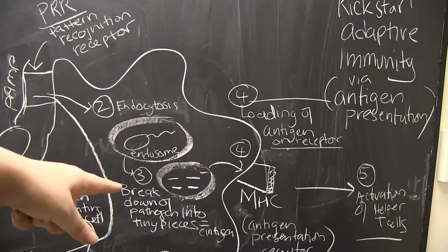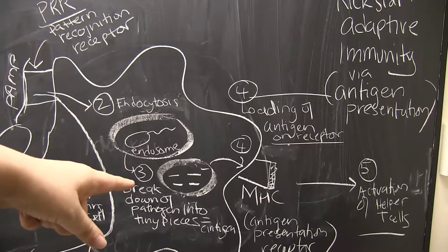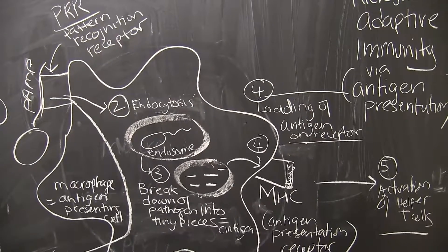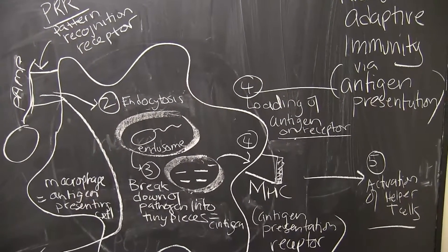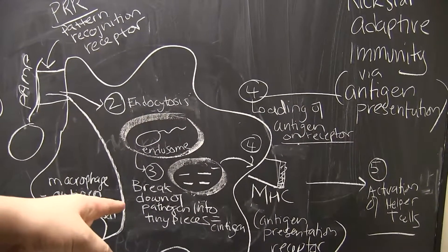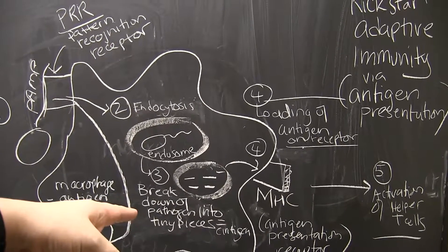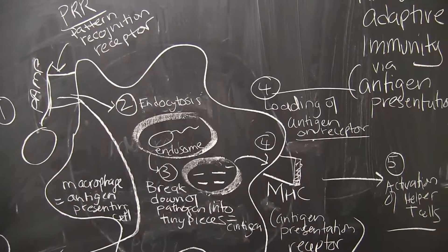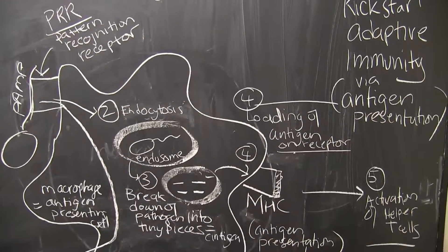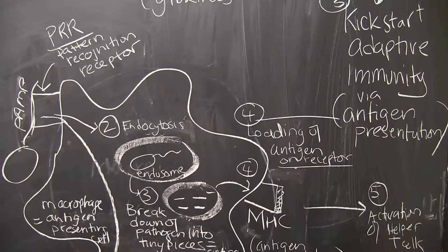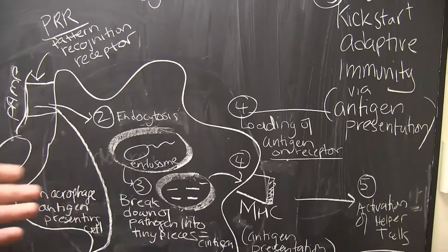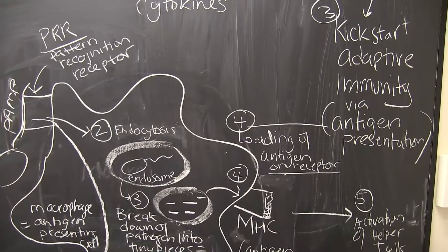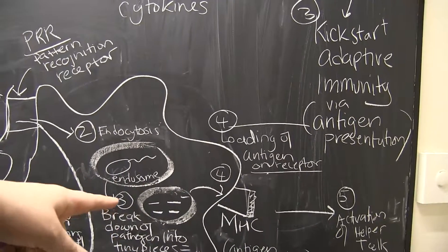Step number three: inside the endosome, there are special enzymes, acids, and other conditions that aid in the breakdown of the pathogen into tiny little bits. These tiny bits are sequences of whatever made up that pathogen — so bacterial DNA, pieces of the cell wall, cell membrane, and also pieces of the flagella.